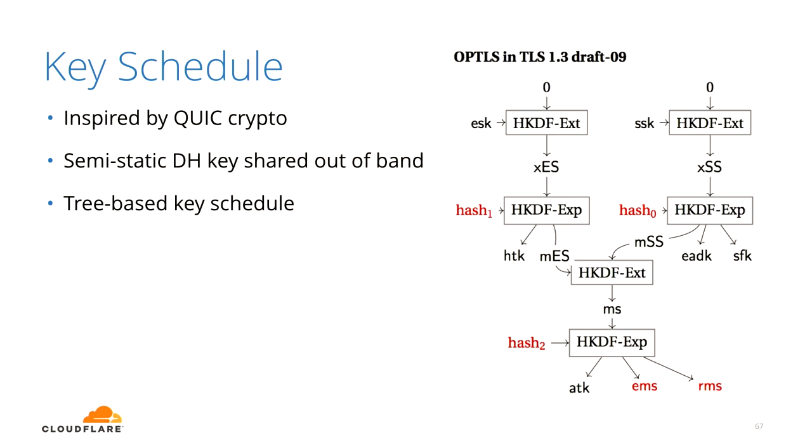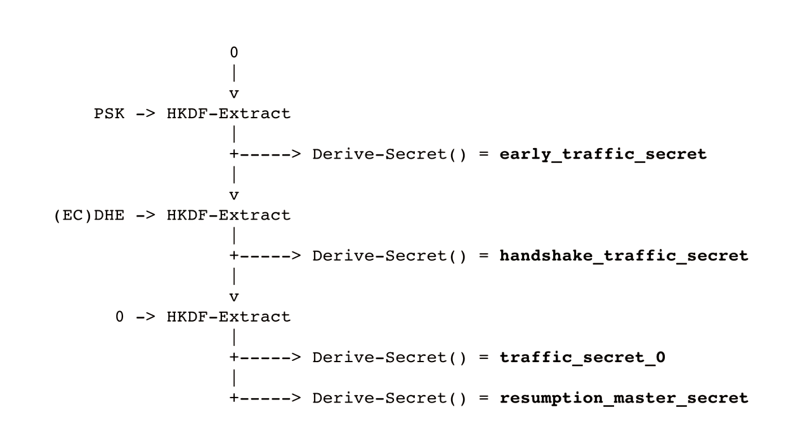Over time, that complicated diagram was whittled down to what TLS 1.3 has now: a very simple derivation algorithm. It took a lot of work to get from something big to something small.